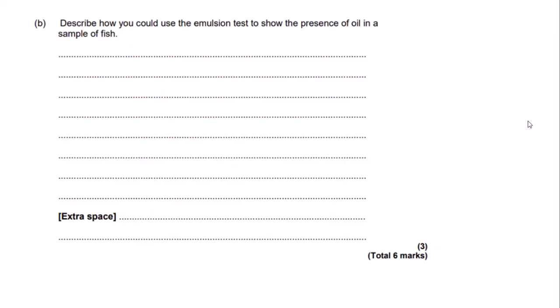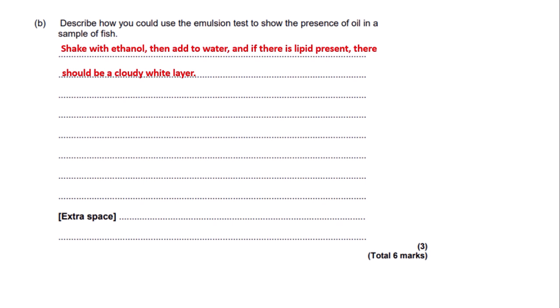Here is a good example emphasising the importance of not using information from the stem of the question in your answer. This is about tests for lipids. The question says: describe how you could use the emulsion test to show the presence of oil in a sample of fish. A lot of textbooks describe the test for lipids as an emulsion test, where a white emulsion indicates a lipid. However, since the word 'emulsion' already appears in the stem, you should not use it in your answer. Instead, I've written: shake with ethanol, then add to water as usual; if there is a lipid present there should be a cloudy white layer — not 'a white emulsion', because that term is already in the question.